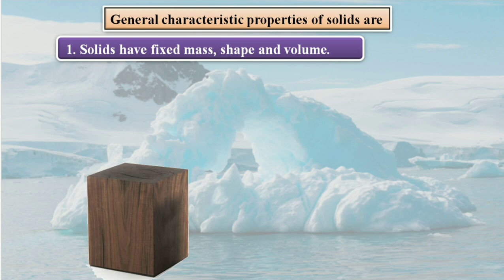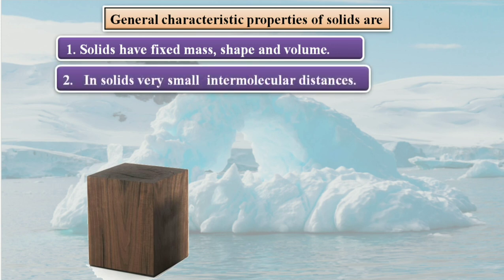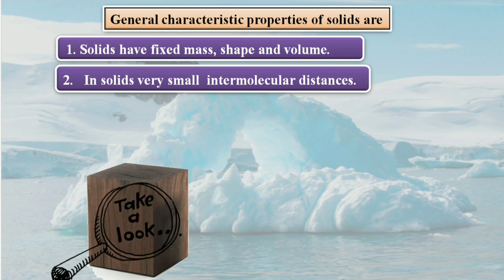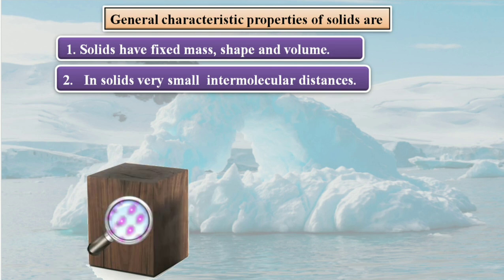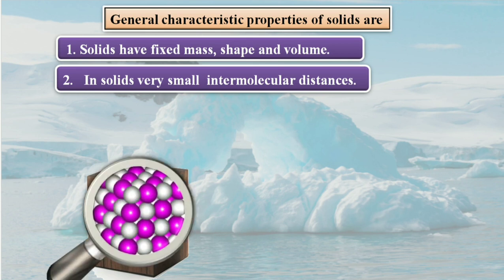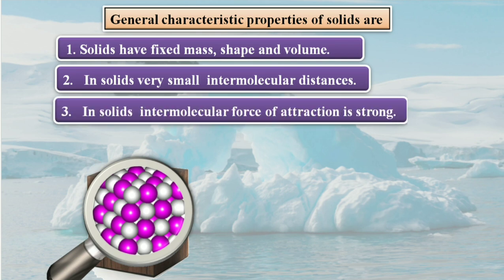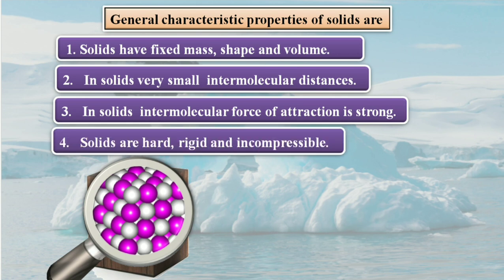In solids, very small intermolecular distances are present. The particles are arranged very closely, which means intermolecular forces are very strong — that is also one important characteristic property. Solids are hard, rigid, and incompressible. These are all the general characteristics of solids.